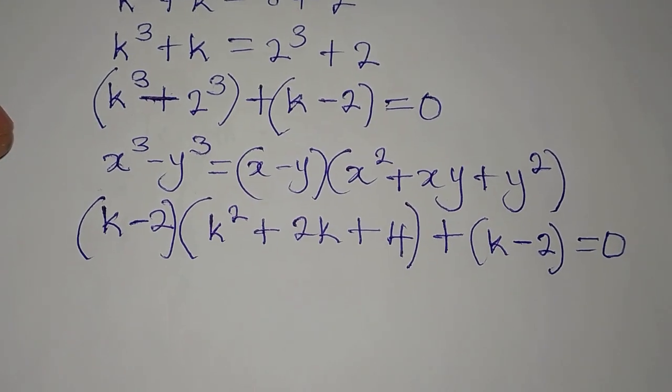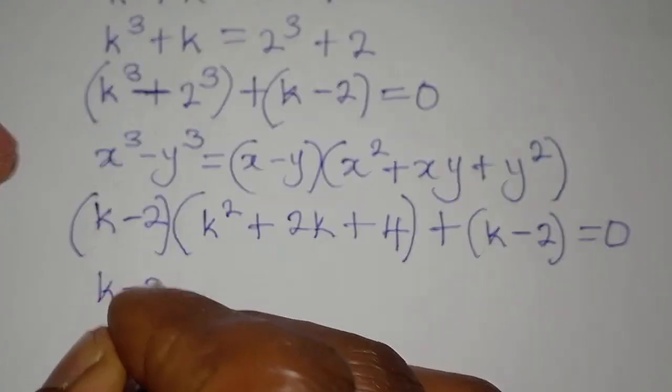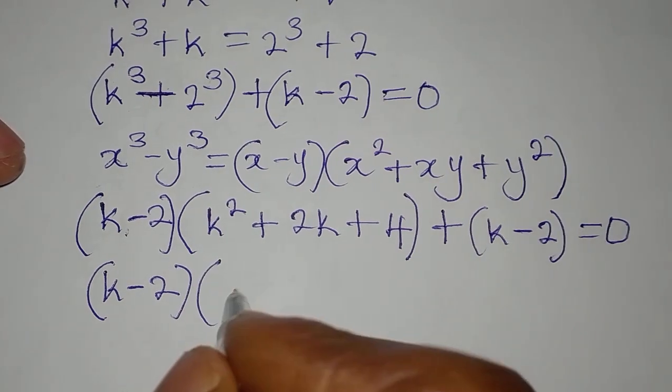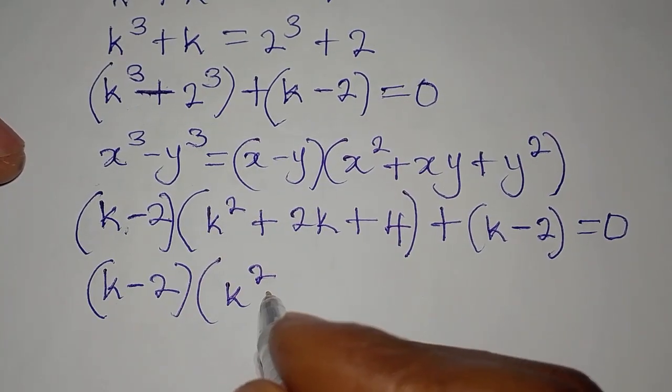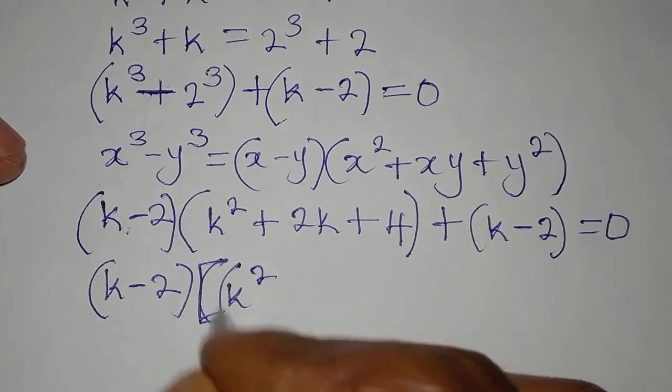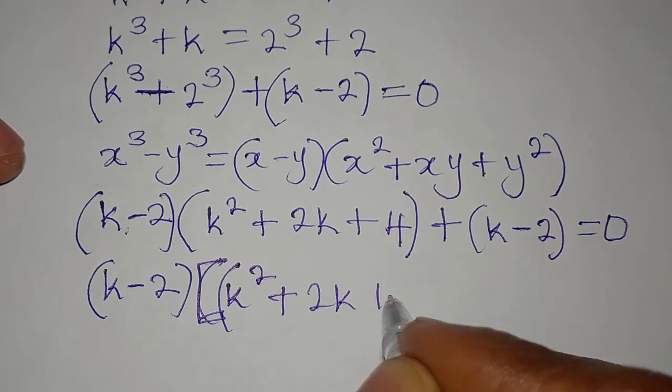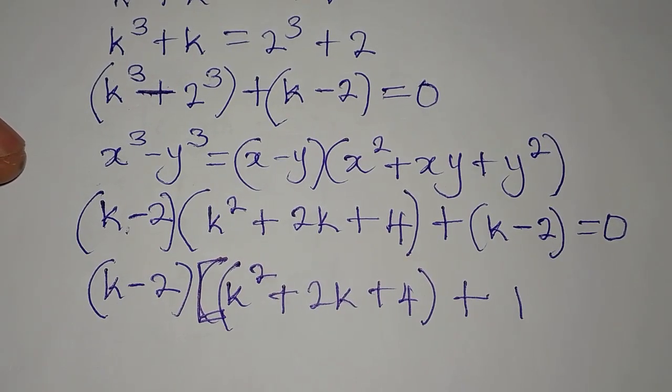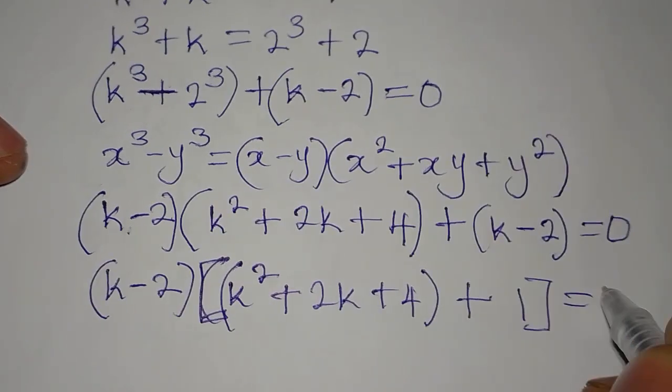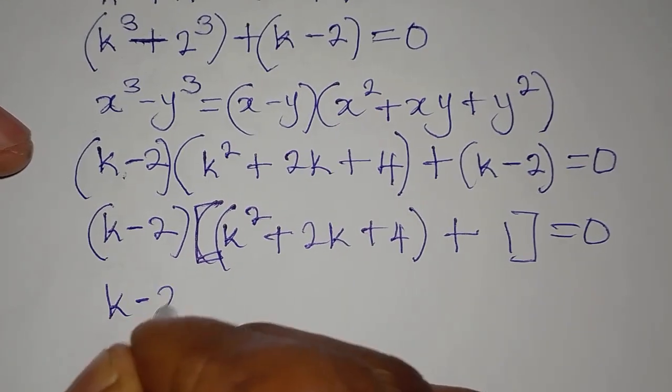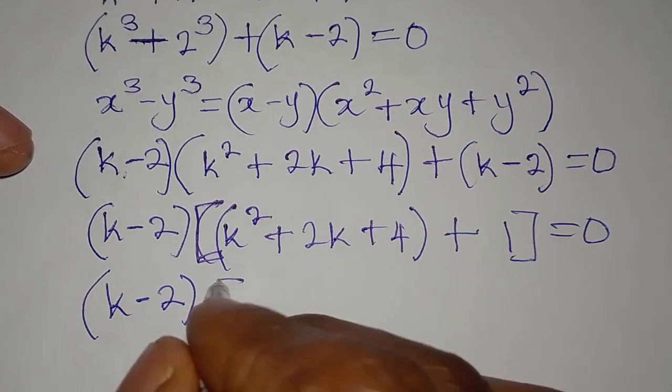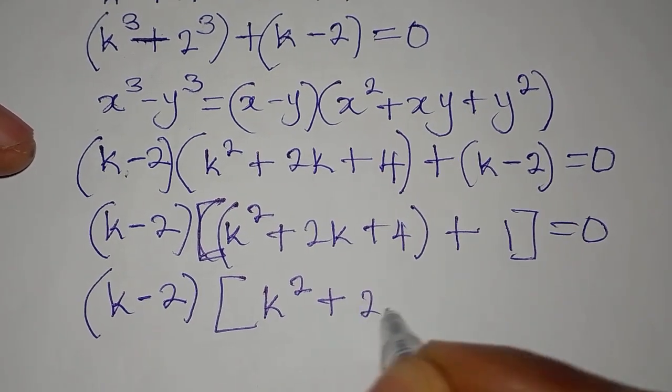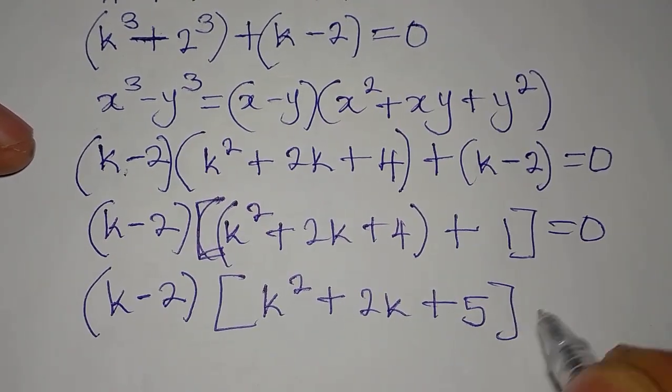And at this point, we are going to carry out factorization so that k minus 2 comes out as the common factor. It's here, and it's over there. We have k squared plus 2k plus 4. Then plus, this divided by this is 1, we have 1 over there. And then we close it, and we equate to 0. Now, k minus 2 is over there. Then here now, we're going to add this and this. So 4 plus 1 is 5 over there. k squared plus 2k plus 5 is equal to 0.